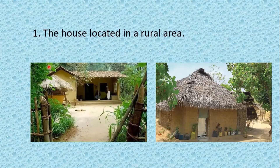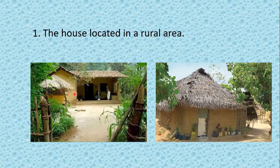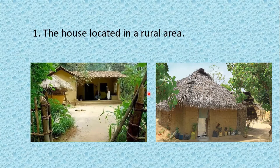The first one: the house located in a rural area. Now pay your attention towards the surroundings of these houses. They are small and seem to lack facilities.